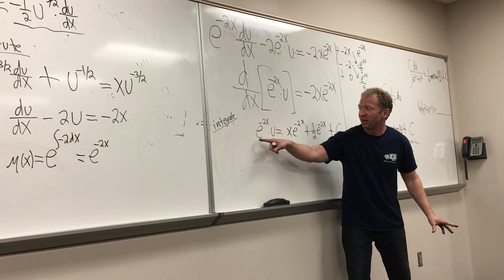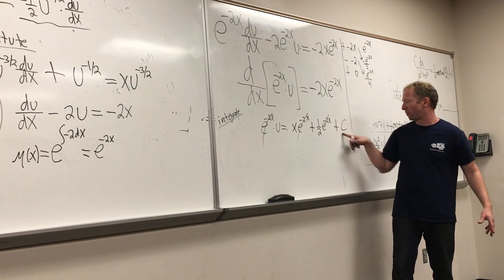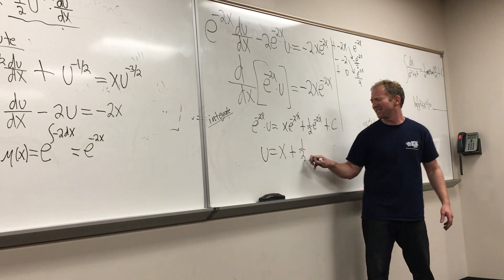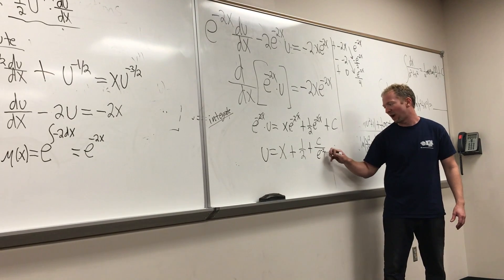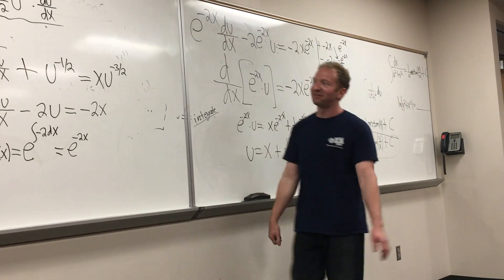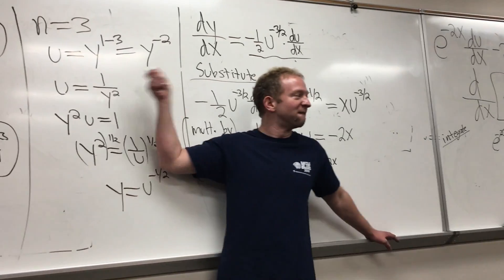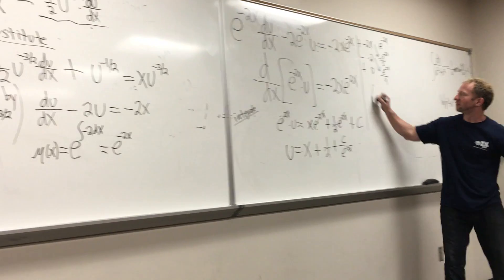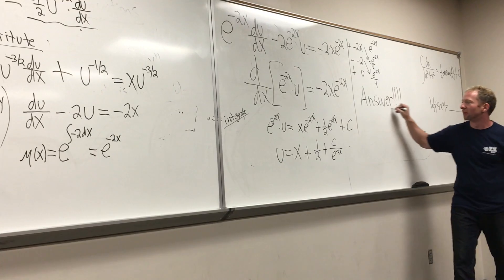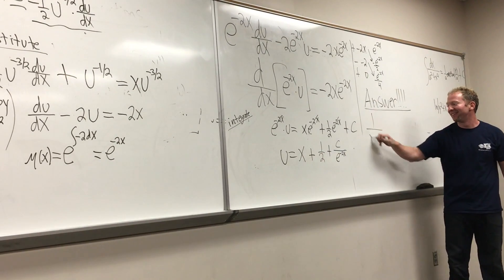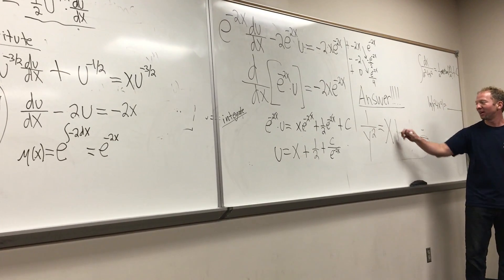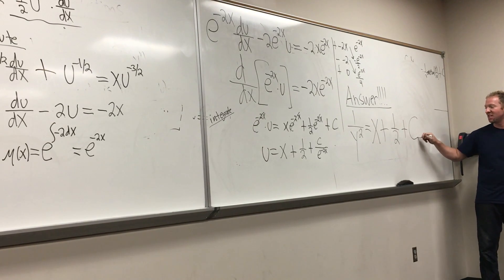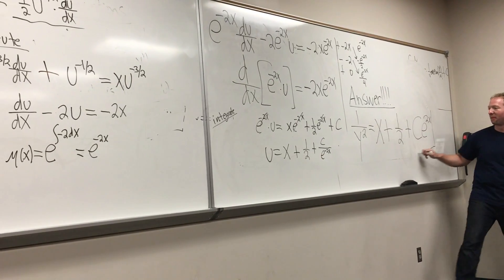To solve for u, we just divide everything by e^(-2x). So u equals x plus 1/2 plus C over e^(-2x). But we're still not done — because u equals y^(-2), which is 1 over y squared. So the final answer is: 1 over y² equals x + 1/2 + C·e^(2x).